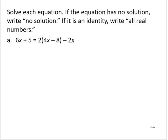If we look at this equation, it doesn't look too bad. Let's apply the distributive property and simplify on the right hand side. So we'd have 6x plus 5 is equal to 8x minus 16 minus 2x. And we can continue to simplify on the right hand side. So we'd have 6x plus 5, and 8x minus 2x on the right is 6x minus 16.